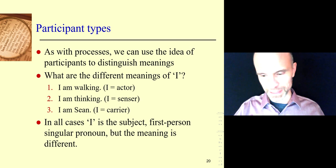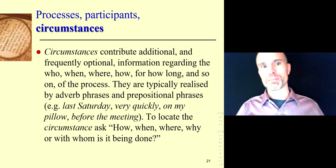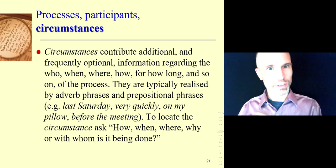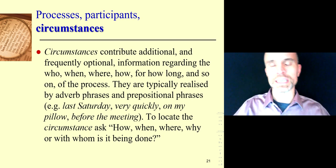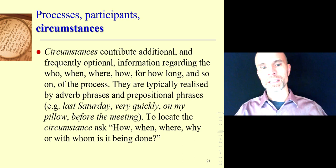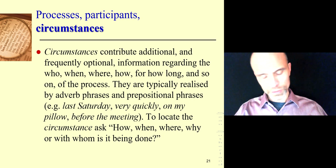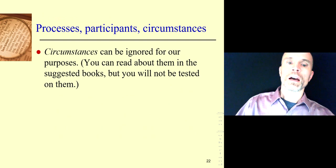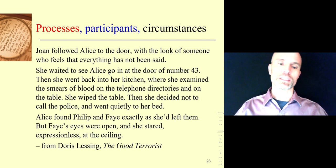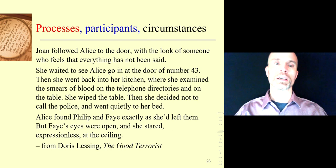You can find the participants for behavioral and existential processes in the description of this video, but I'm not going to talk about them now as those are the minor processes. Circumstances — extra information — you can pause here and read about them. There's a full description of circumstances in books on functional grammar such as the one recommended at the end of this presentation, but you don't need to know it for today. So: processes, participants, circumstances — that's the framework.